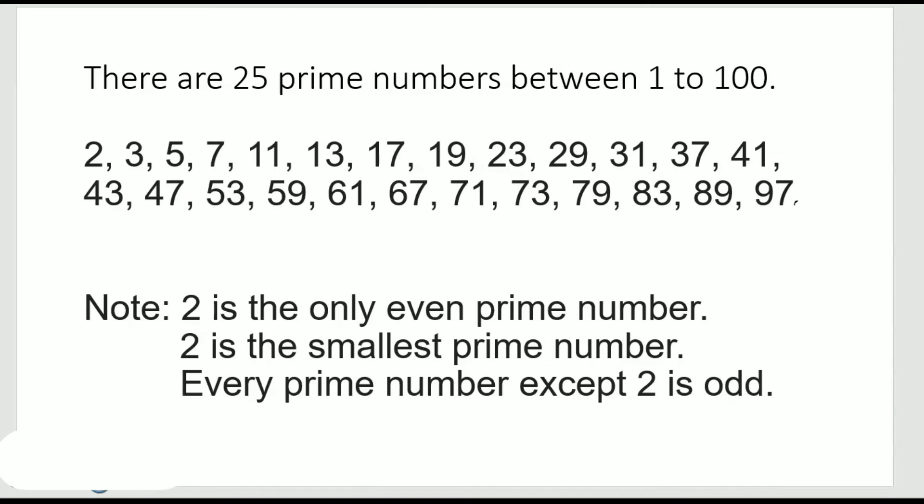Now, the point to be noted is 2 is the only even prime number. The other even numbers — that means 4, 6, 8 — all these are multiples of 2. So they are not prime numbers because they are going to have more than 2 factors. Also, 2 is the smallest prime number.